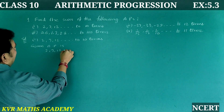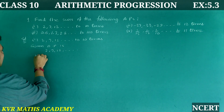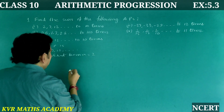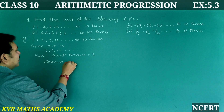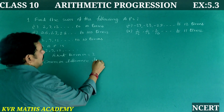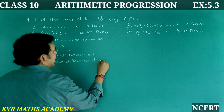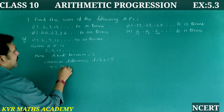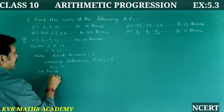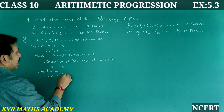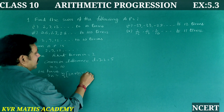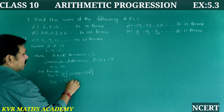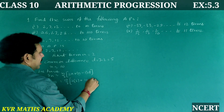Given AP is 2, 7, 12, and so on. First term a is equal to 2. Common difference d is equal to a₂ minus a₁ = 7 minus 2 = 5. Number of terms n is equal to 10. We use the formula Sₙ = n/2 × [2a + (n−1)d].